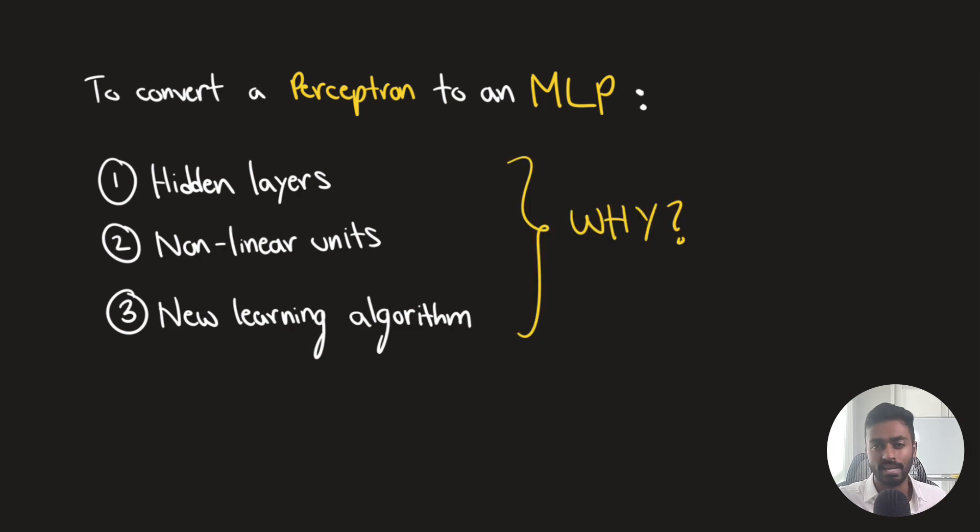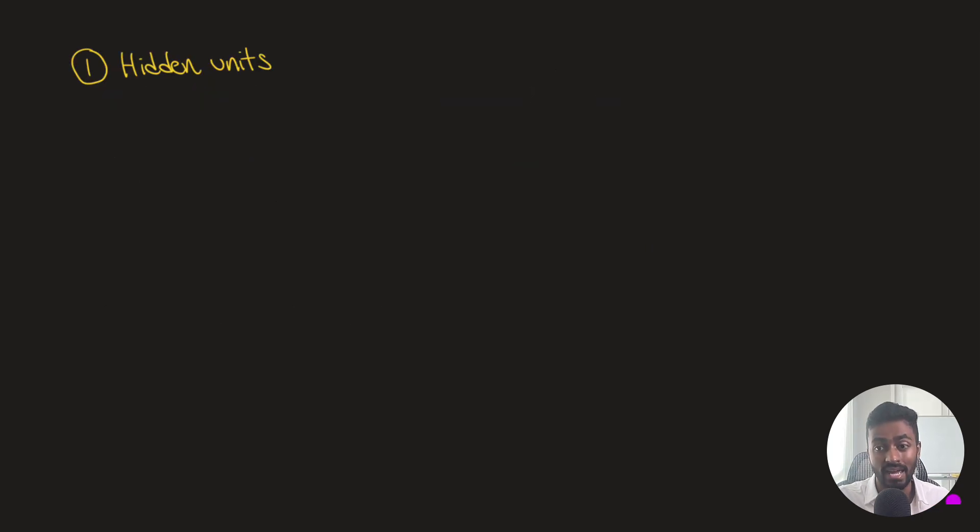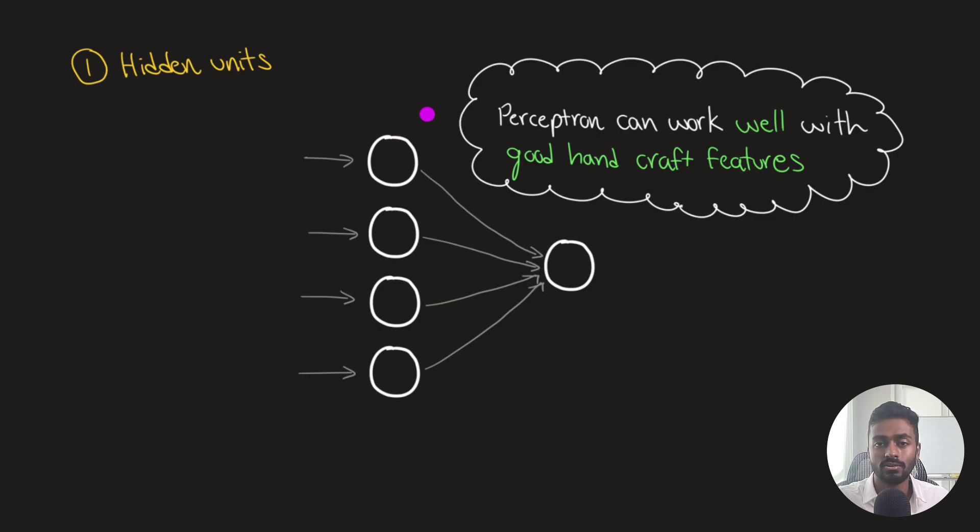So to convert the original perceptron to the multi-layer perceptron, we have made these three changes. We've added hidden units. These hidden units are non-linear computation units. And we've also replaced the perceptron convergence learning procedure with the backpropagation of errors learning procedure. But why are we doing any of this at all? And in this video, we're going to take a look at each of these three points to understand exactly why and how they work. So first of all, let's talk about hidden units.